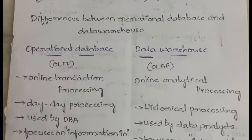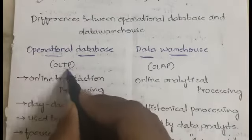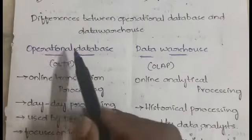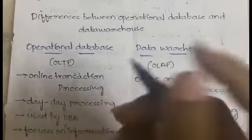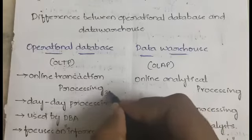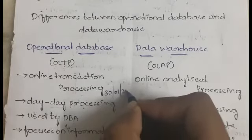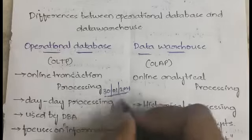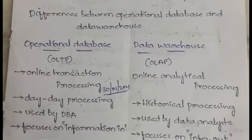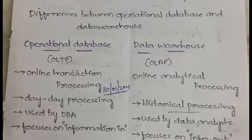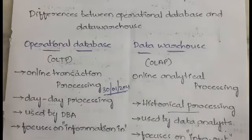In operational database we do day-to-day data processing. For example, today's date is 30 January 2021, so whatever data is related to today is processed — not historical data. Historical processing means data from one month back, three months back, six months back, twelve months back. All previously completed data can be processed in a data warehouse, whereas in a database only day-to-day processing is done.